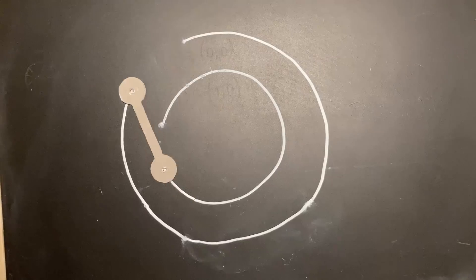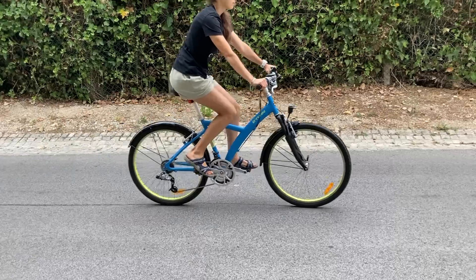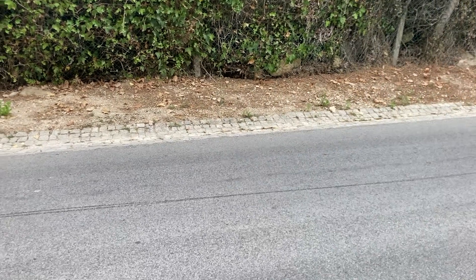The only circle that makes the back wheel follow the path of the front wheel is a circle of infinite radius, that is, a straight line, which we're trying to avoid.